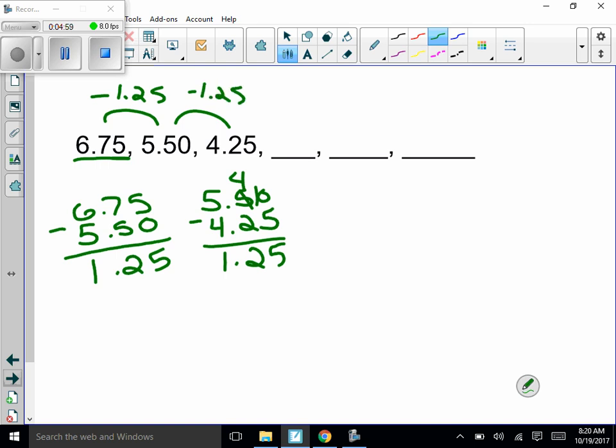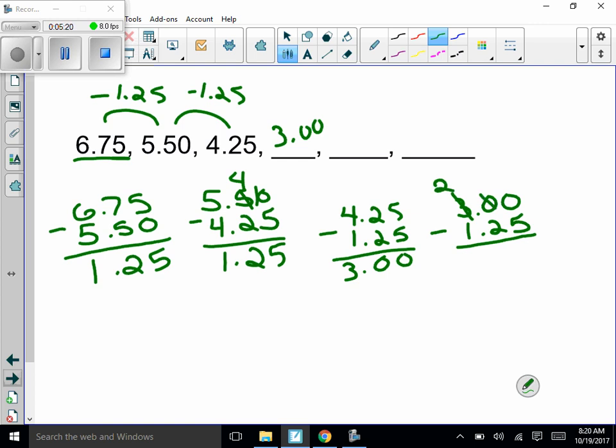1.25, so now all we look at is that we are subtracting 1.25 from all these. So let's go 4.25 subtract 1.25, zero zero, so this one's 3. Then we'll go 3.0 minus 1.25. Can't do it, can't do it. We're going to have to borrow here, make this a 10, make this a 9, make this a 10. Okay, 5, 7, 1.75.